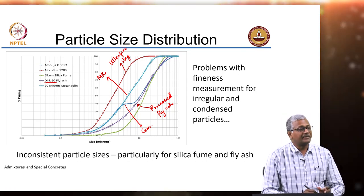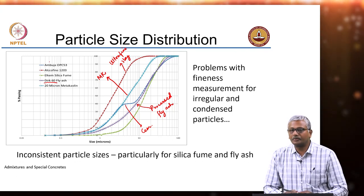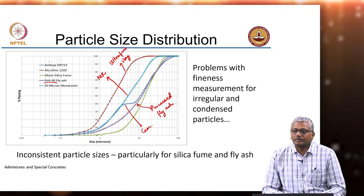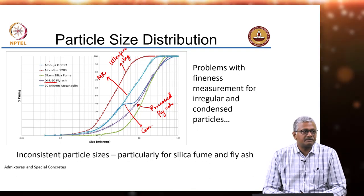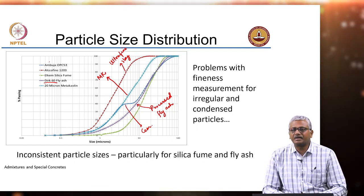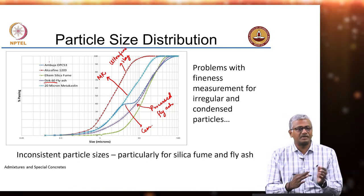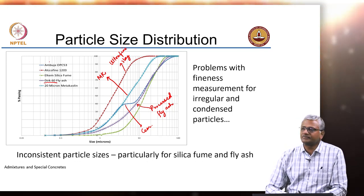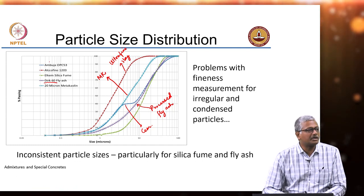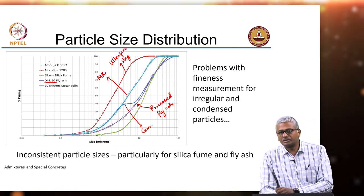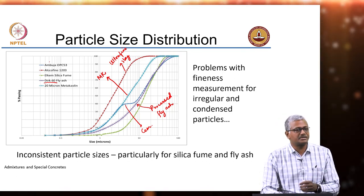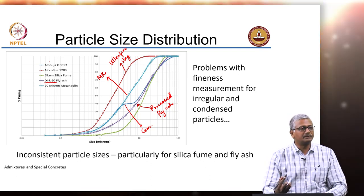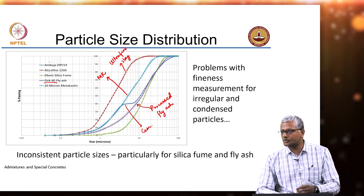It is also important to specify the method by which the measurement is done. When very fine powders are present, you can measure fineness in several ways. In cement, we can do a sieving test — sieving through a 90-micron or 45-micron sieve — but that does not give us the particle size distribution; it only tells us about fineness. Sometimes we do the Blaine's air permeability test, which gives us a value of fineness in square meters per kilogram, but it still does not give us a particle size distribution. For soils we use a sedimentation test, and many of the initial tests for cementitious materials were also like sedimentation tests.